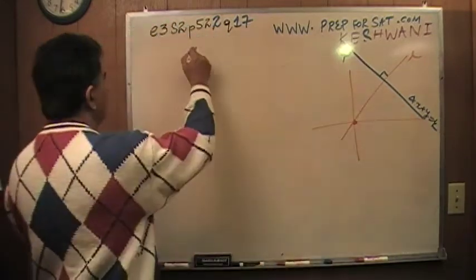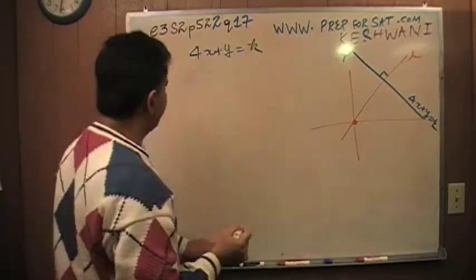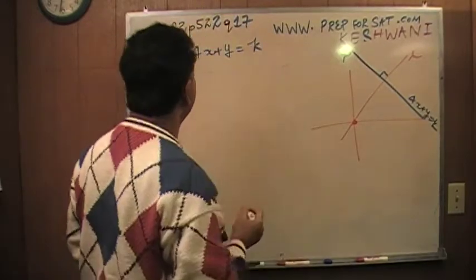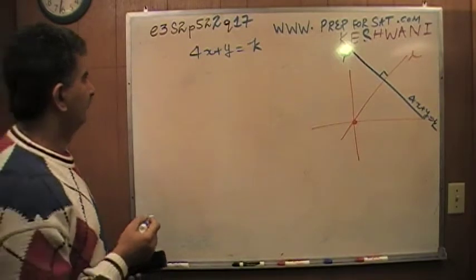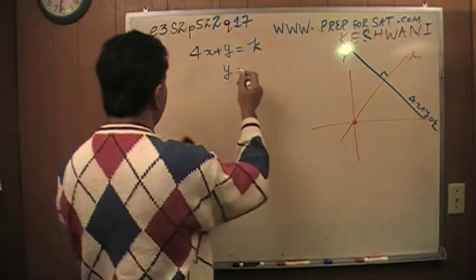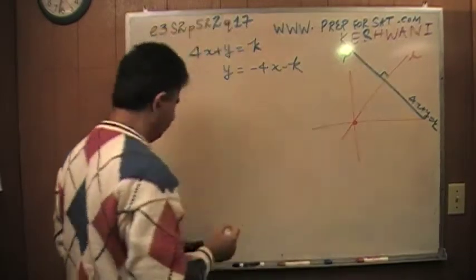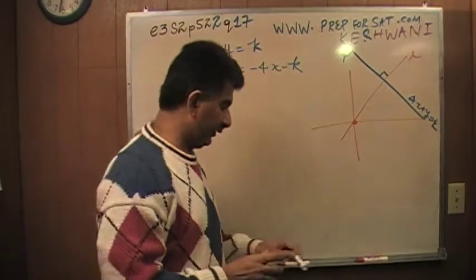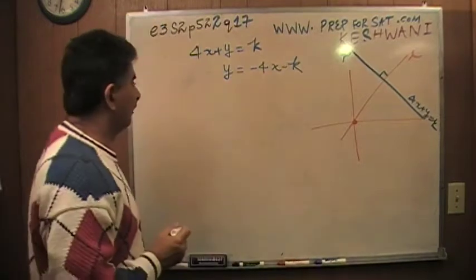4x plus y equals k. How do you write this equation in a standard form? Like this. Bring the 4x on the other side. There you go. And if I lost you already, then skip this question. You are not ready for it. You have not had the math to do this question.